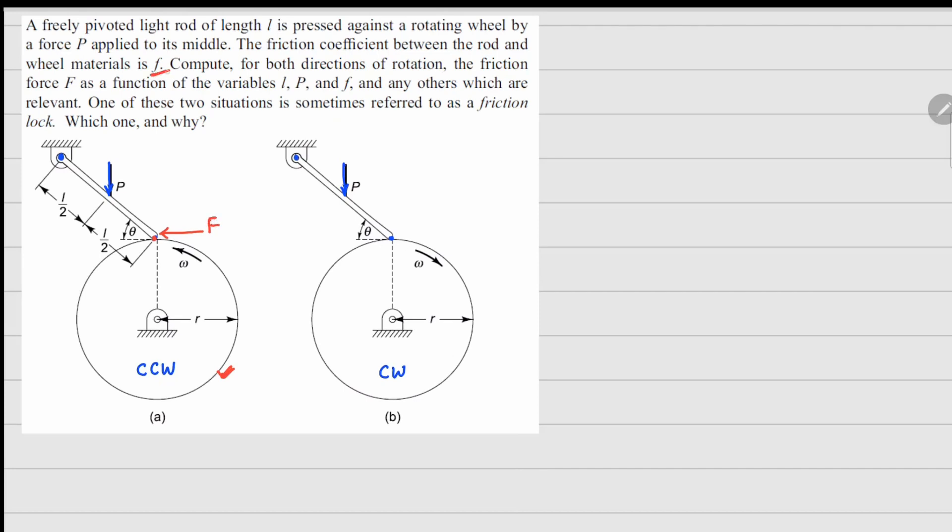Now, if the coefficient of friction is small f here, the normal reaction at this point N can be written as capital F divided by small f. Going by the same logic, here your friction force will be to the right, and your normal reaction again is going to be capital F divided by small f.